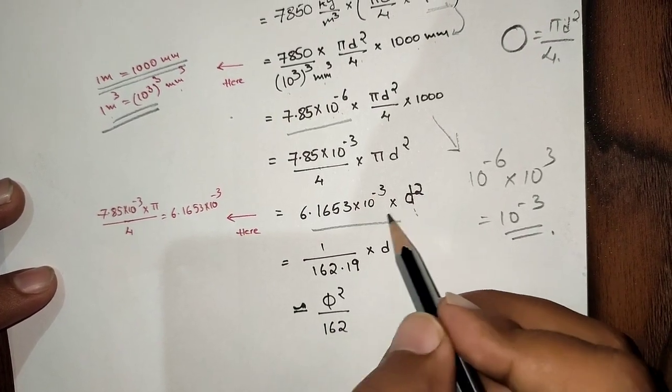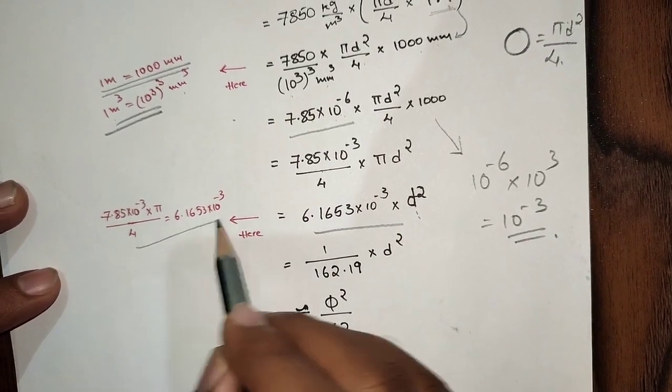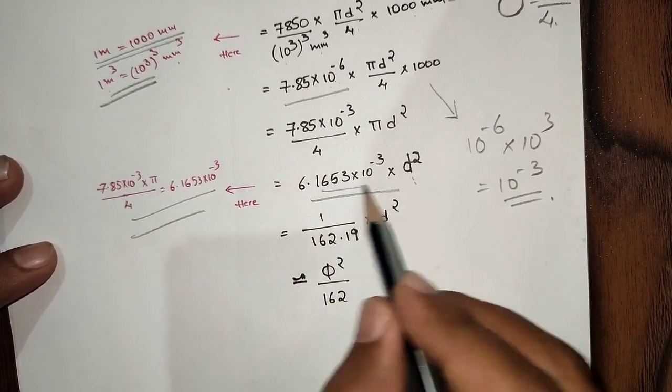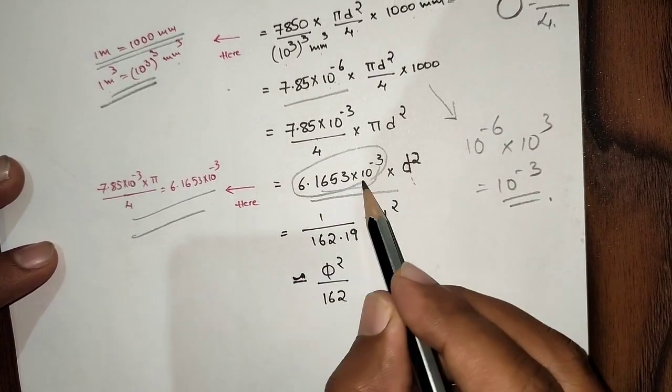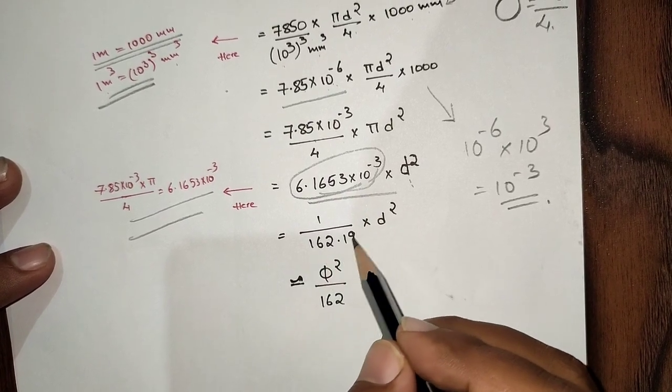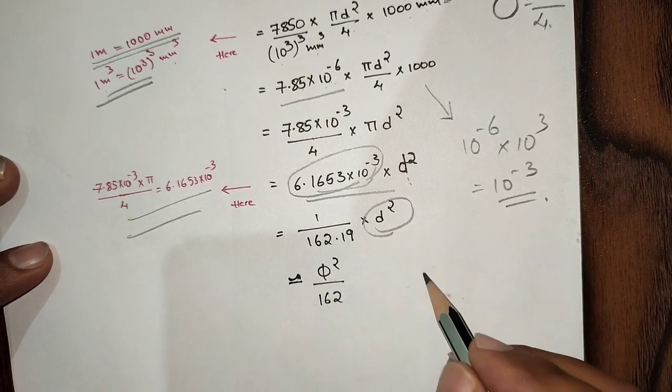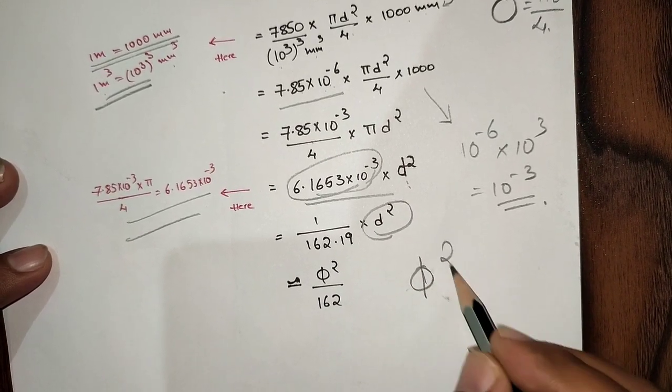6.1653 × 10⁻³. It was explained here, please go through it. Now 6.1653 × 10⁻³ will become 1/162.19 × d². So now here d² is φ².